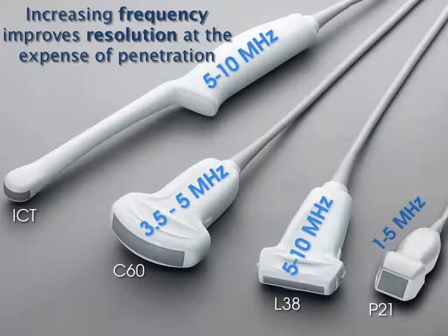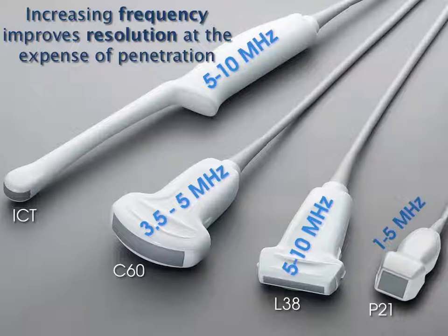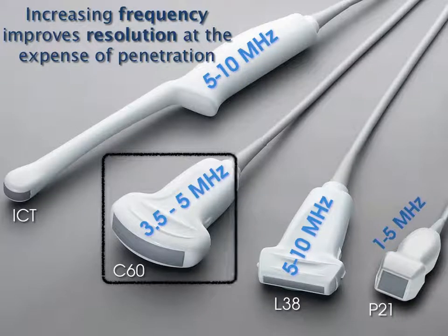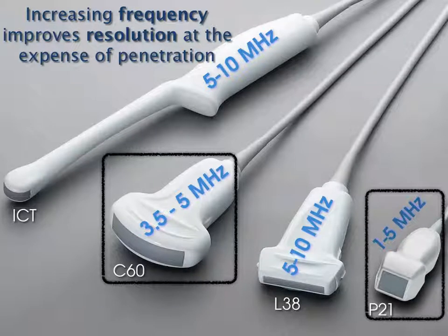Which transducer do we want to use to image the bladder? When you increase frequency, you get better resolution at the expense of penetration. The bladder is not right up against the skin line, so we need a probe with low enough frequency to penetrate deeper into the body. We can use either the C60 or the P21. Most machines have the P21 and it looks fine for the bladder. Ideally the C60 looks a little prettier — it has more crystals. In a pinch, either of the other two probes could work, though not ideally.